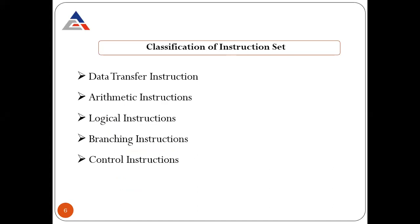Now let's look at the classification of the instruction set of the 8085. We have a total of 74 instructions bifurcated into five parts: data transfer instructions, arithmetic instructions, logical instructions, branching instructions, and control instructions.